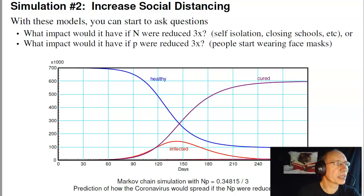Equivalently, since it's n times p, I could leave n alone and reduce p by 3 times, such as people start wearing face masks. Self-isolation, social distancing would also work. We run the simulation and just drop n times p by factor 3. Here's what you get.